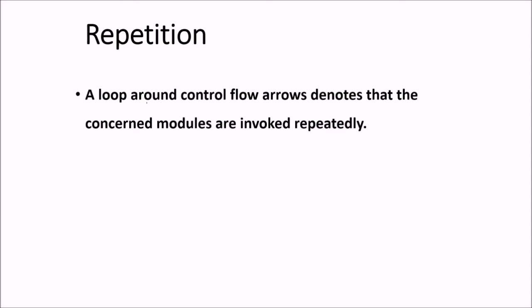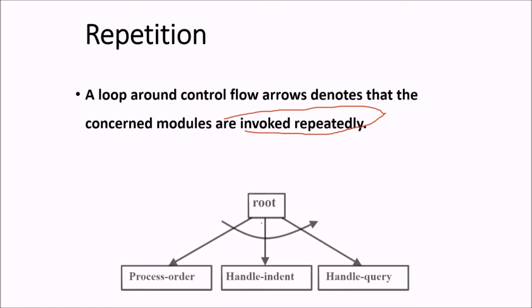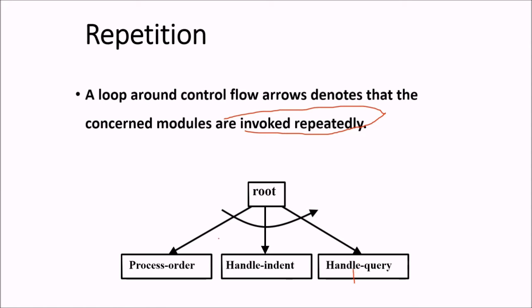What about repetition? A loop around control flow's arrow denote that the concern modules are invoked repeatedly. Repetition. This is the arrow which shows a loop around control flow. This loop around control flow arrow is denoting that these concern modules, they are going to be invoked repeatedly.